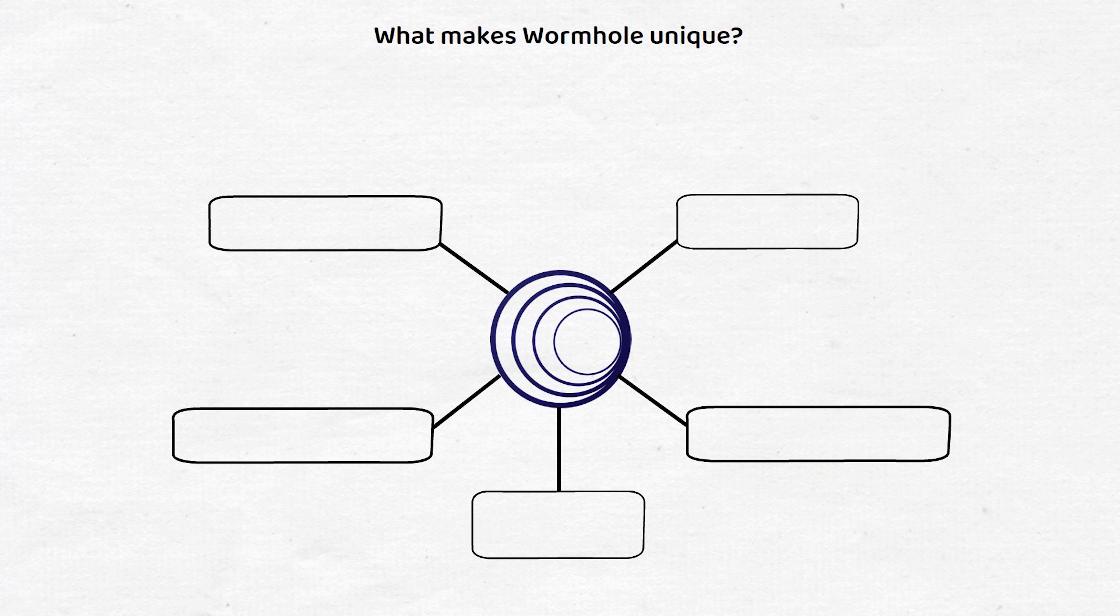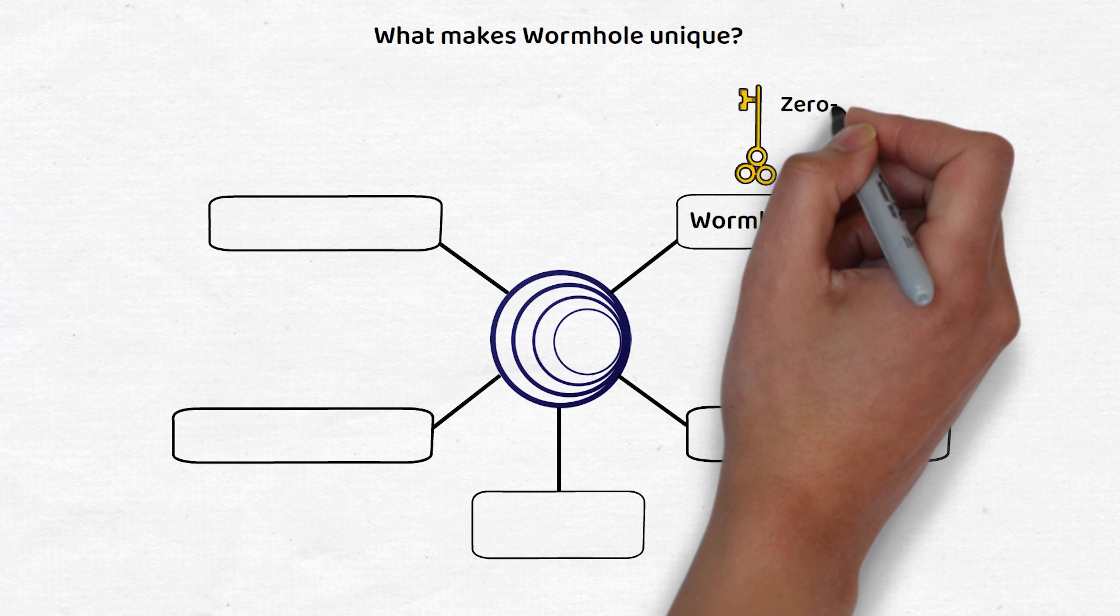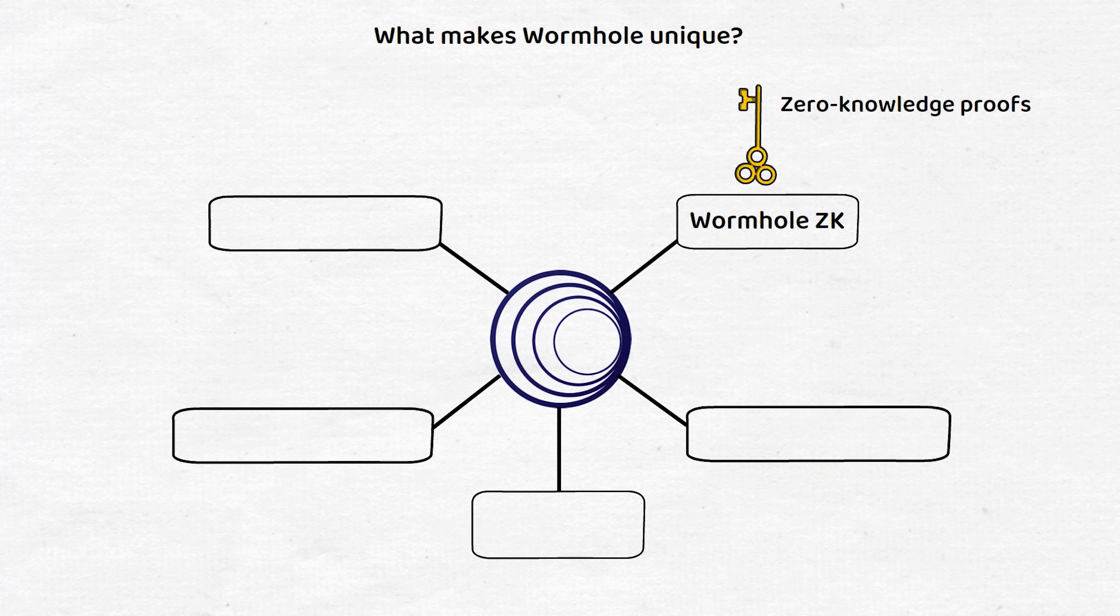This includes Wormhole ZK, which aims to integrate zero-knowledge proofs into the Wormhole protocol, as this will improve the trust assumptions of the protocol overall.